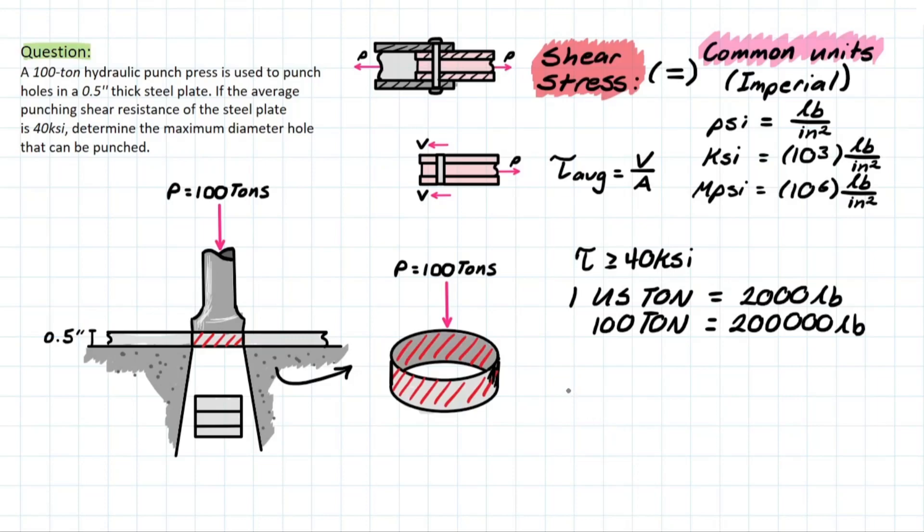As we plug in other values, we can plug in the 40 PSI, which would be 40 times 10 to the 3 for PSI. On top, we have that 200,000 pounds. And then on the bottom, we have area, right? So, what would our area be? The area would be the circumference of this circle times the thickness or the height of our steel plate.